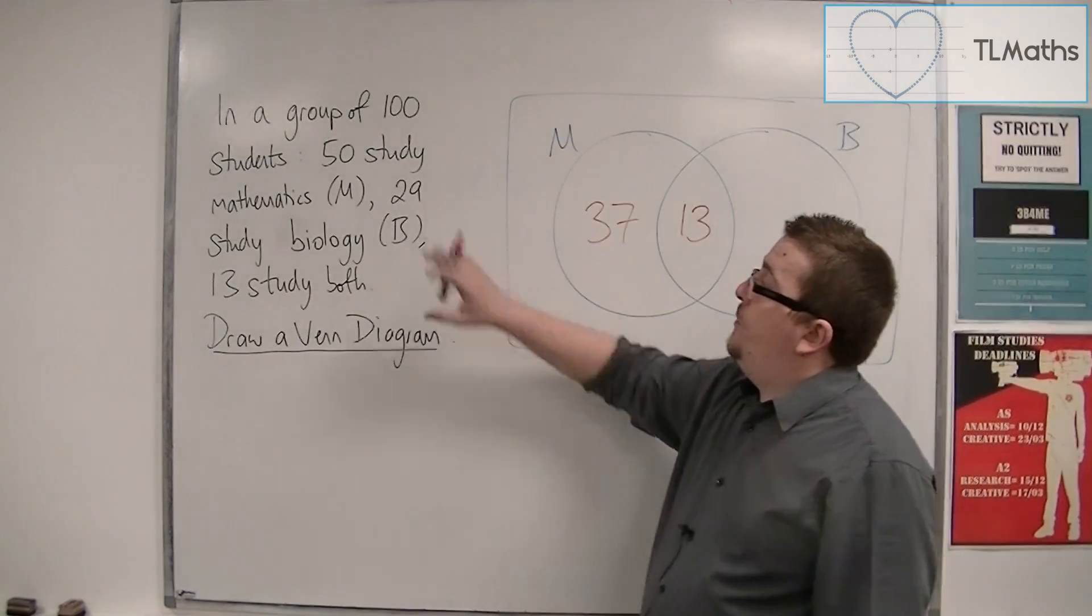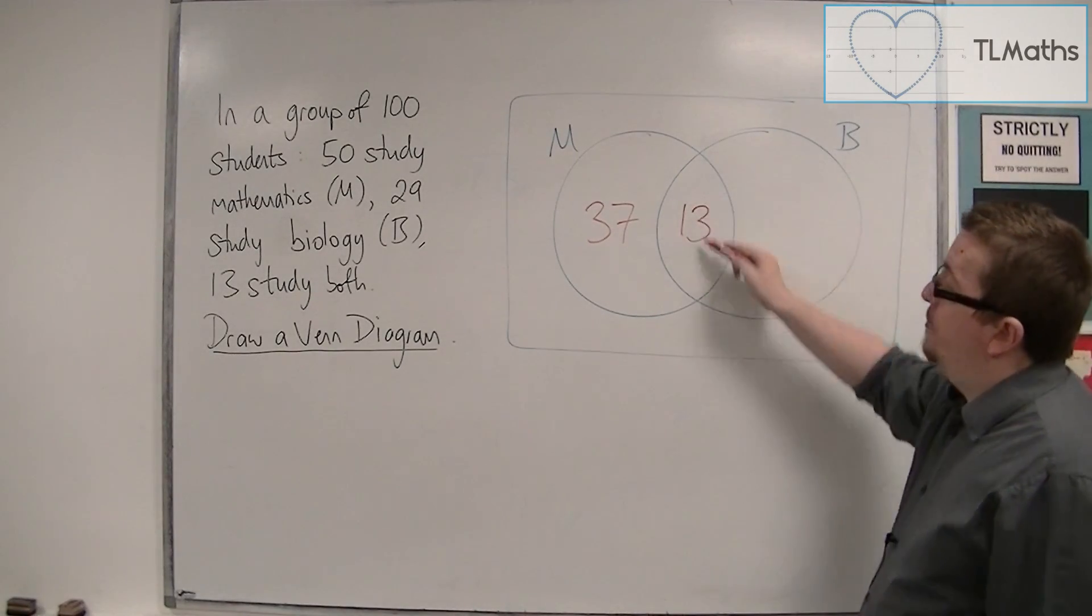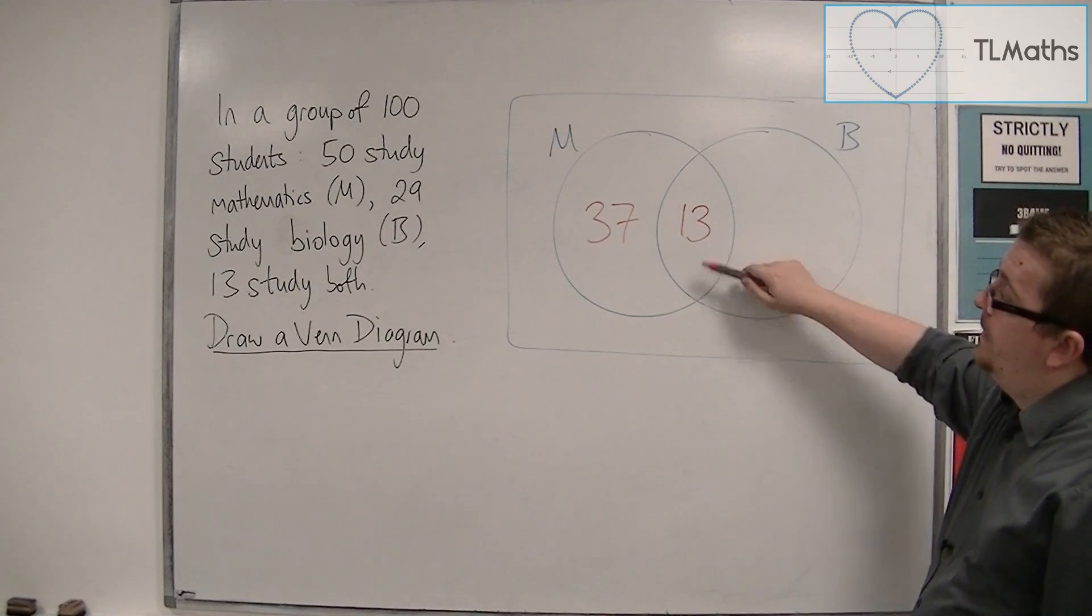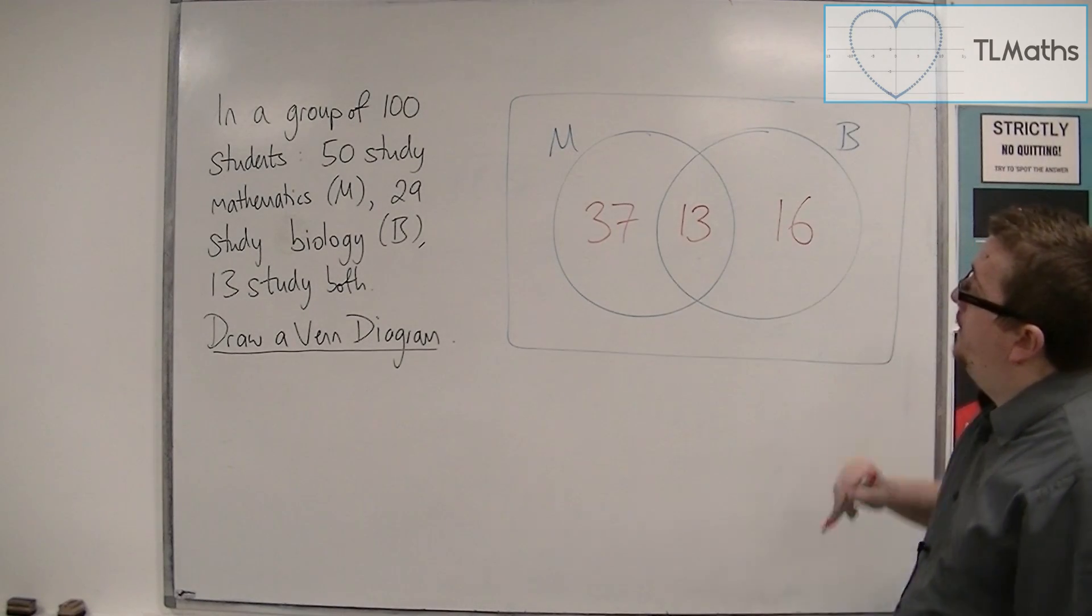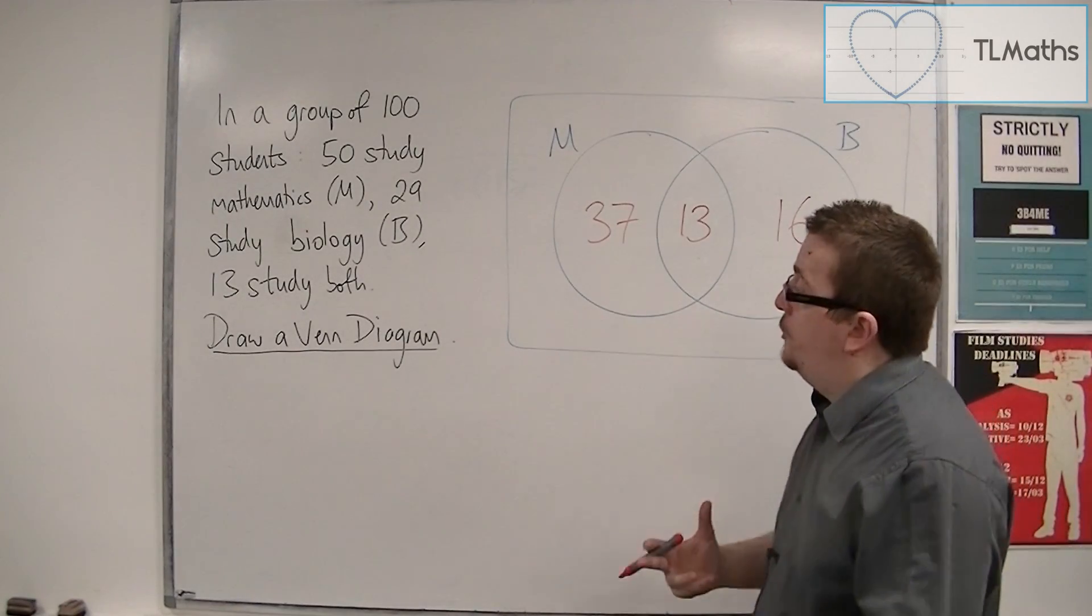For biology, we know that 29 study biology, and so this whole circle must add up to 29. We've got 13 already, and so this must be 16. And so that takes care of maths or biology or both.